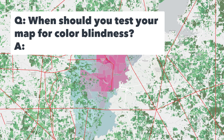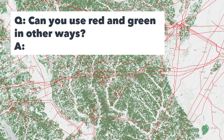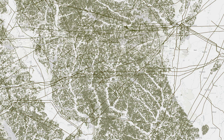So in summary: when should you test your map for color blindness? All the time — you should test every map. Should you use a red-green color scheme? No, it's almost never a good choice. Try red-blue or green-purple schemes instead. Can you use red and green in your map in other ways? Yes, but make sure that one color is noticeably darker than the other and test it with a simulator. Remember, it doesn't matter if you can read your map — what matters is if your audience can read it. Lots of people are going to perceive colors differently than you do, so use the Color Vision simulator to help you choose the best colors for your map.